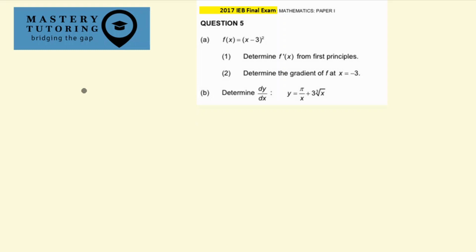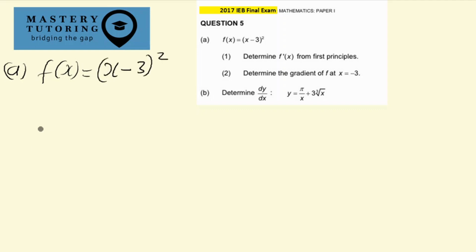Hello guys and welcome to Mastery Tutoring. I'm your tutor Cara from Mastery Tutoring. Today we're going to be doing a question from the 2017 IEB final exam, which is question 5. For part (a), we are given that f of x is equal to x minus 3 squared.